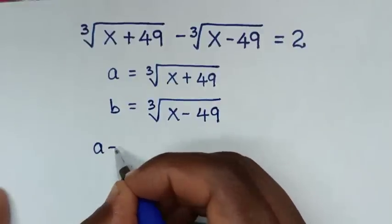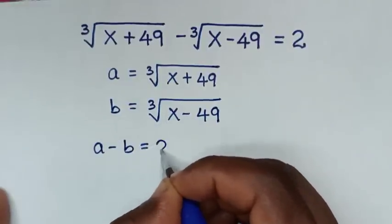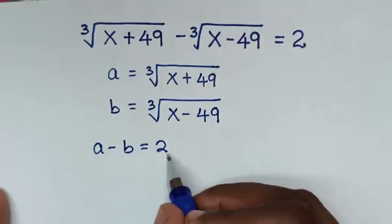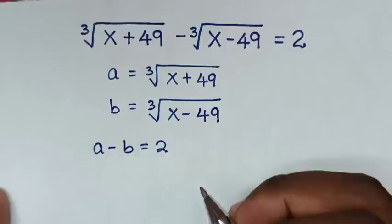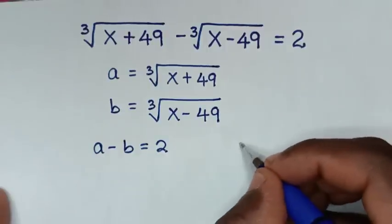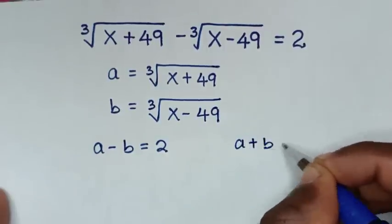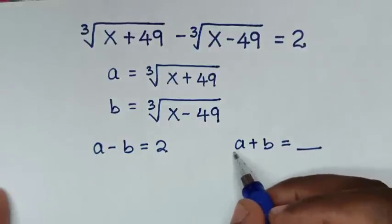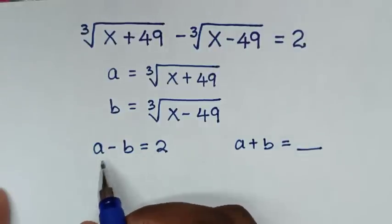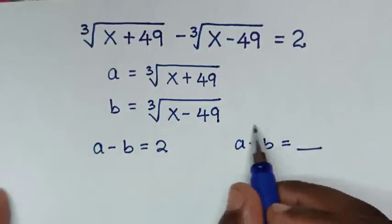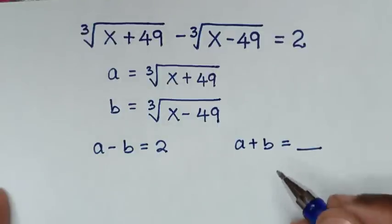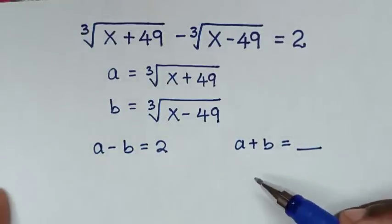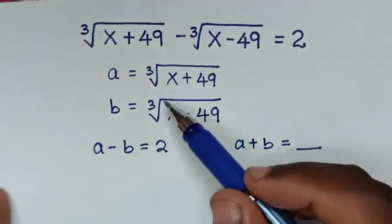So from that we get our first equation: a minus b is equal to 2. Then we will find the second equation, which is a plus b. We will compare these simultaneous equations, then find the value of a and b, and after that we will find the value of x.